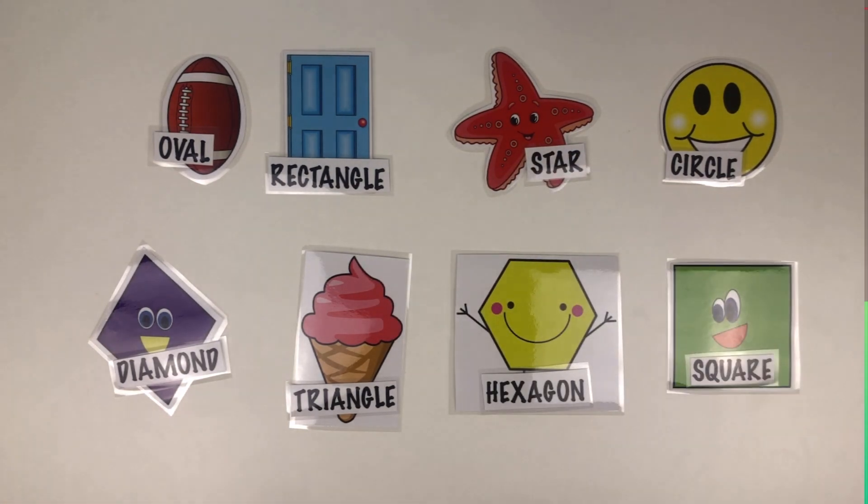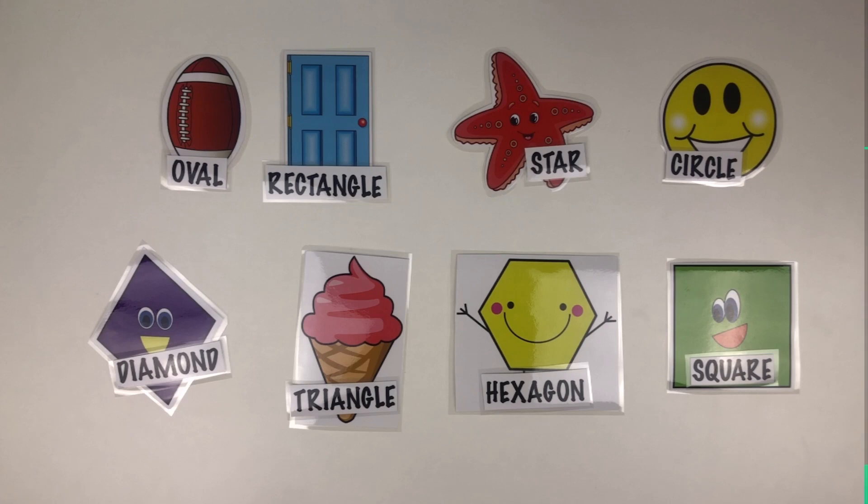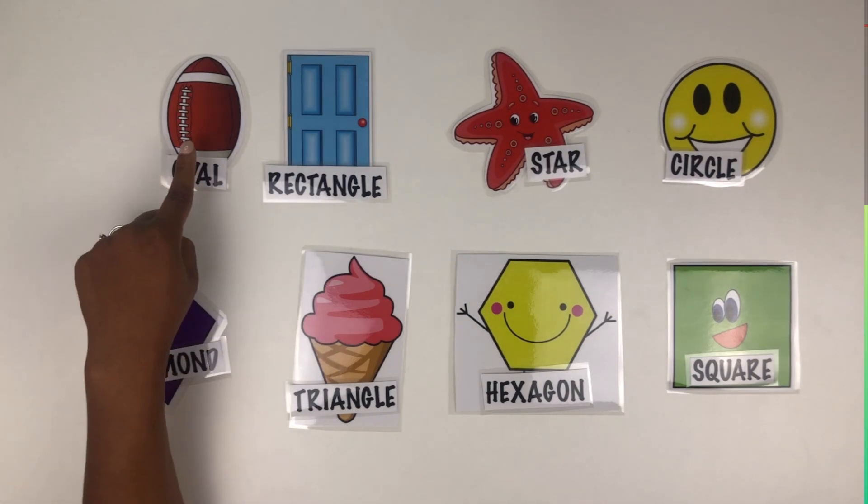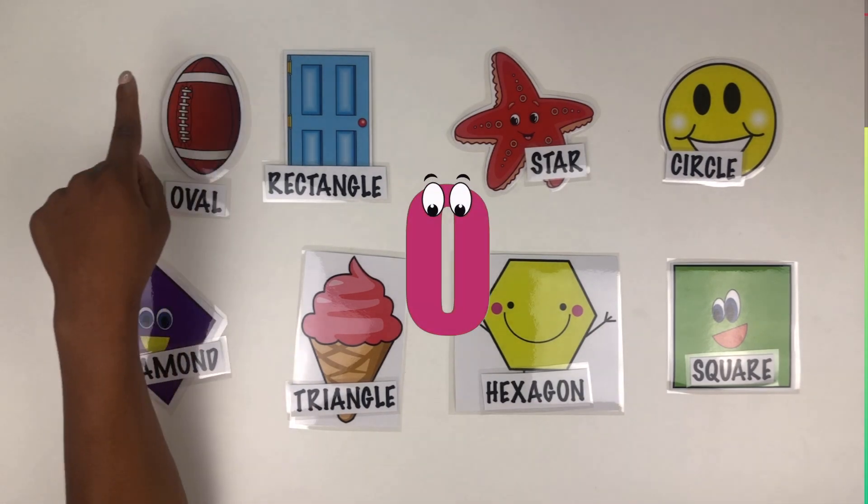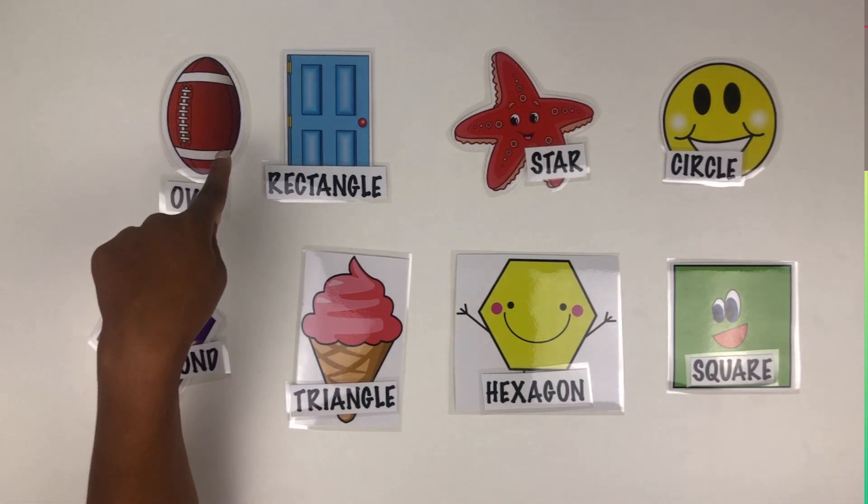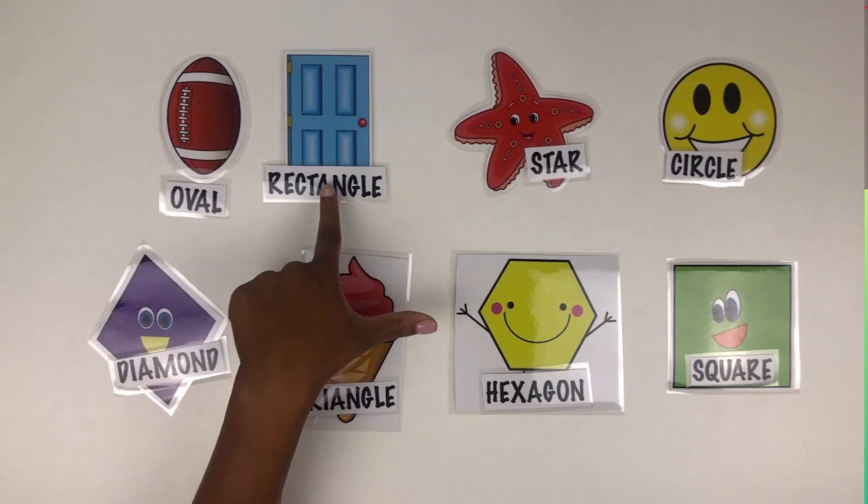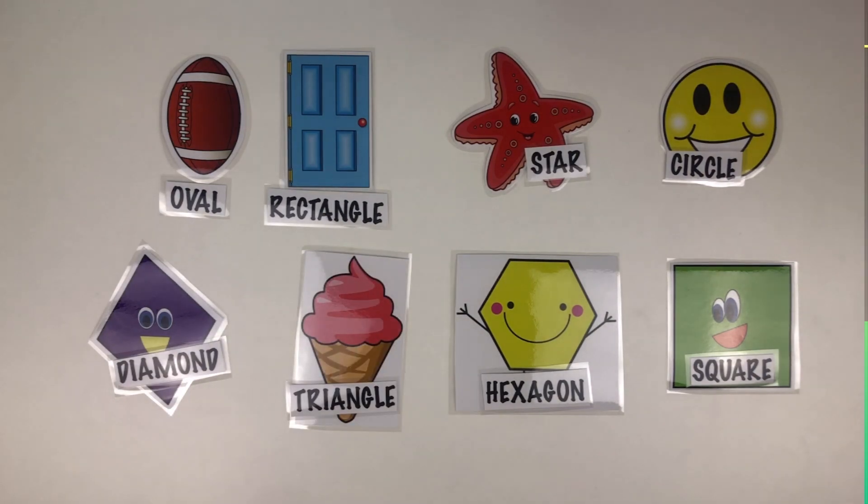Right there, well done. Now we're going to count how many sides our shapes have. How many sides does an oval have? Zero sides because it's round. How about a rectangle? How many sides does a rectangle have? Let's count: one, two, three, four. So a rectangle has four sides.